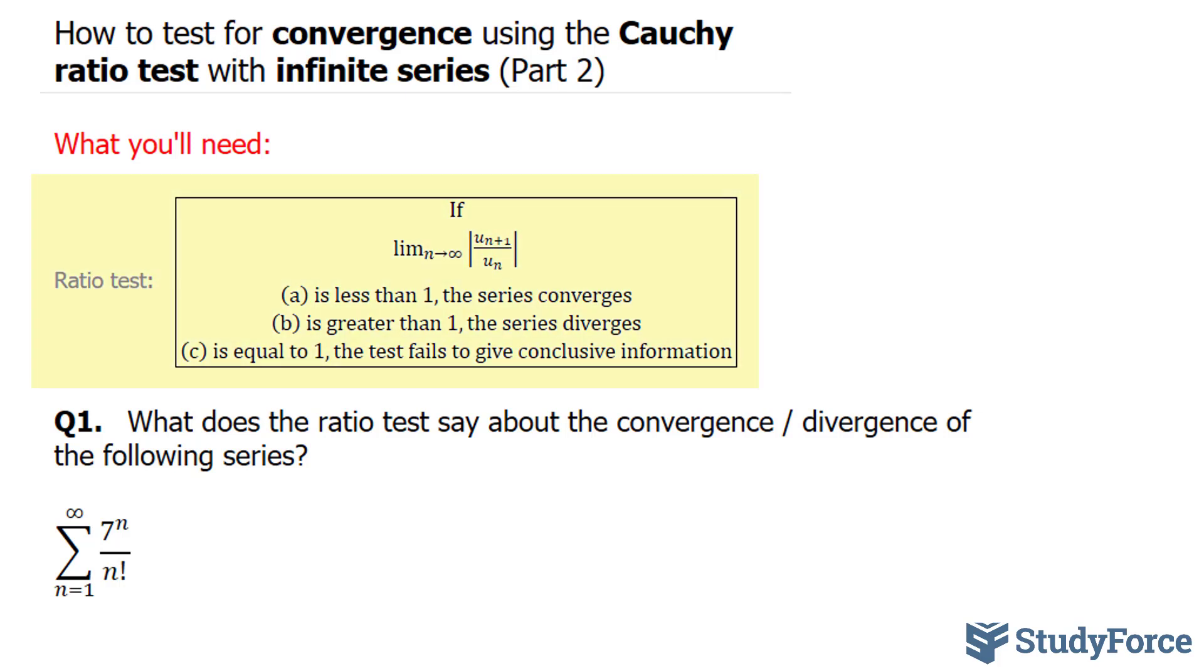As discussed in part one, the ratio test states that if the limit as n approaches infinity is less than one, the series converges. If it is greater than one, it diverges. And if it's equal to one, the test fails to give conclusive information.